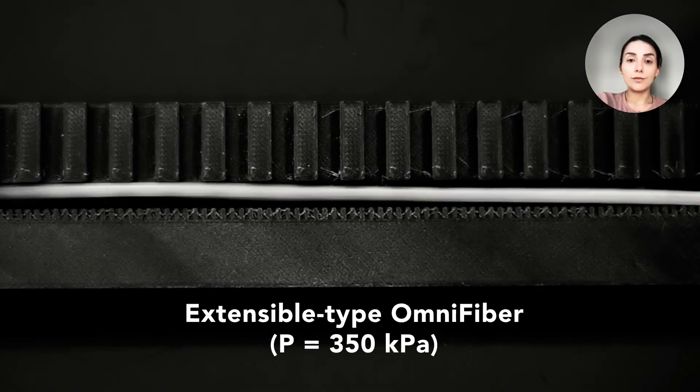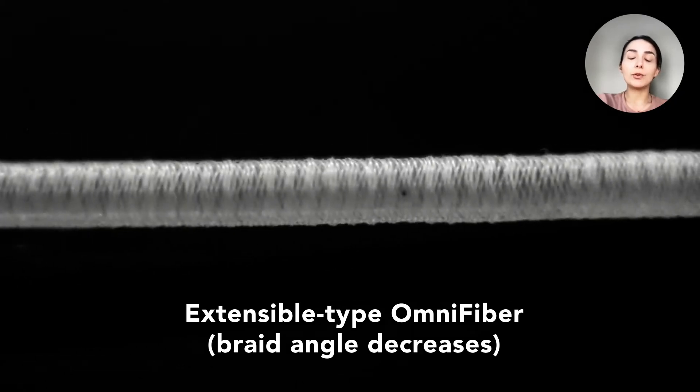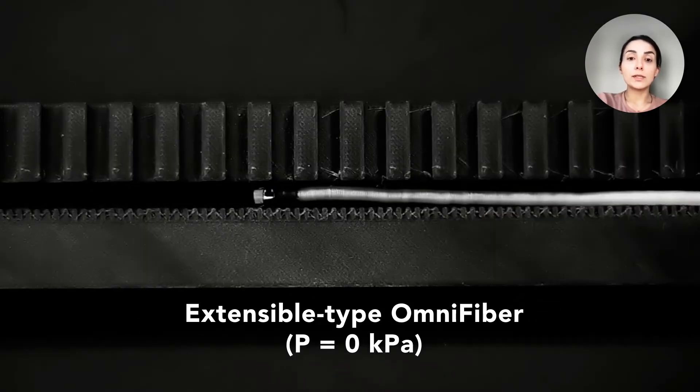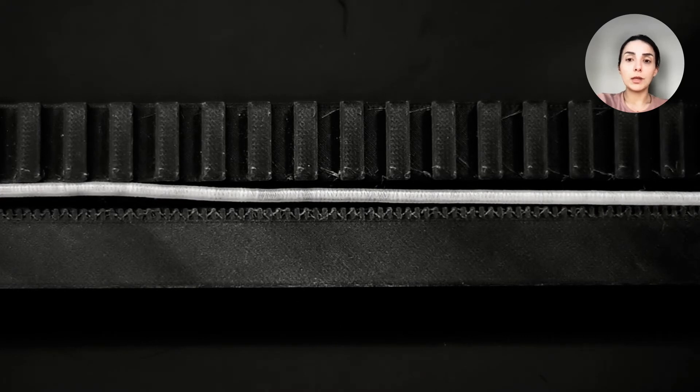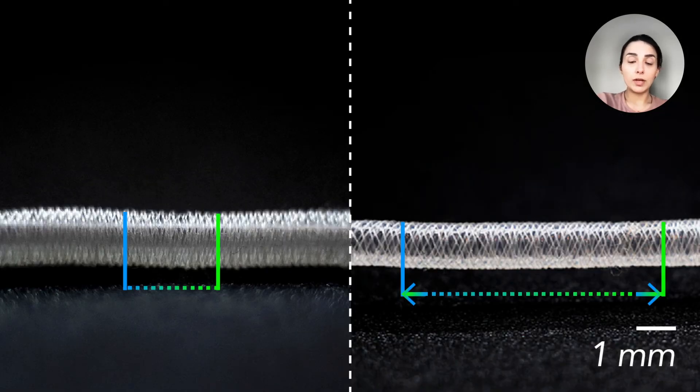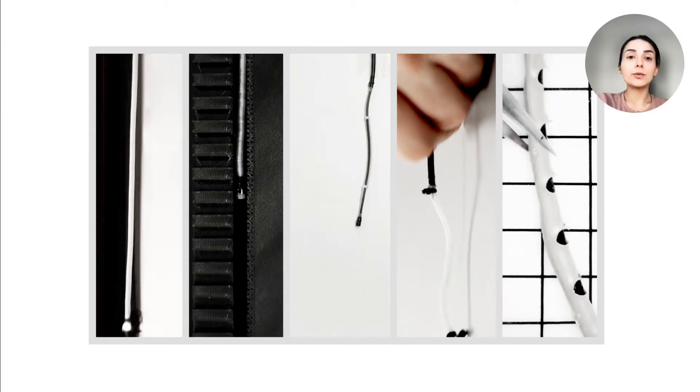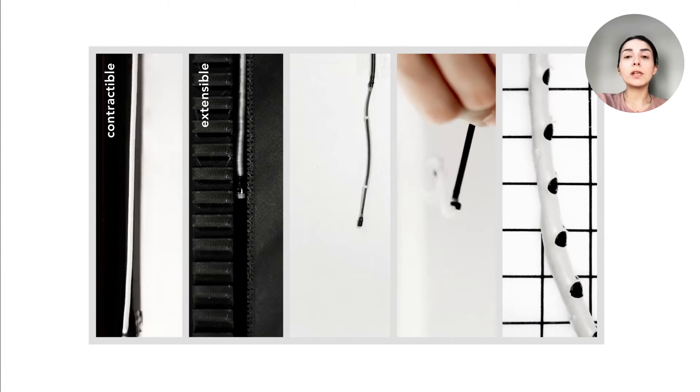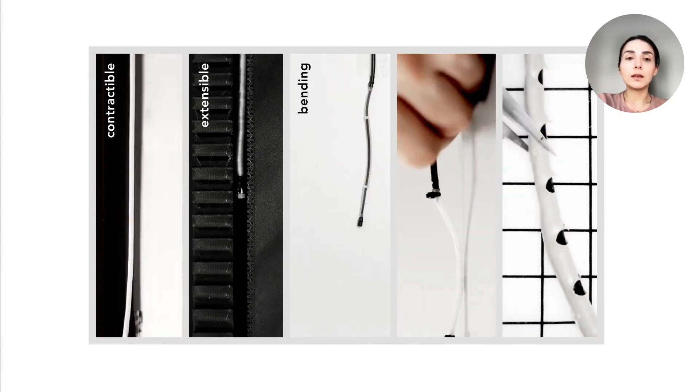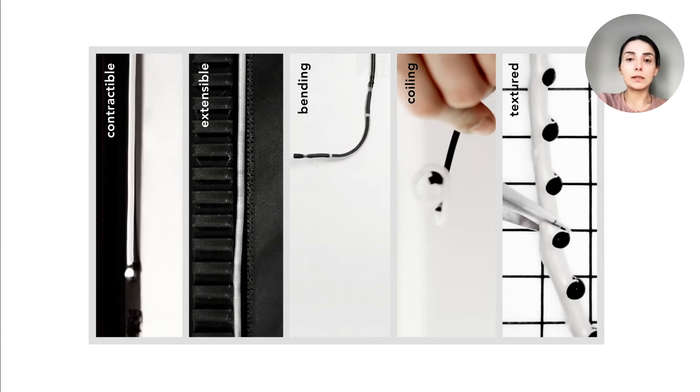The extensible fiber has a similar construct except for a bellowed outer mesh, and it works in an inverse manner. Once actuated, the fiber elongates, providing large strains up to 245%. Based on these two basic motion primitives, we further devise a bending, coiling, and microtextured morphing states.